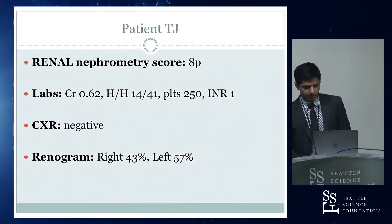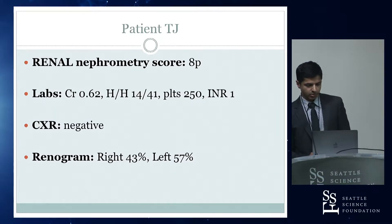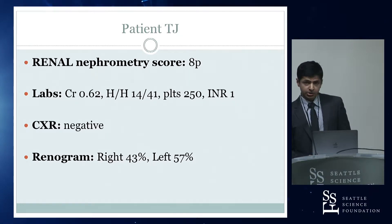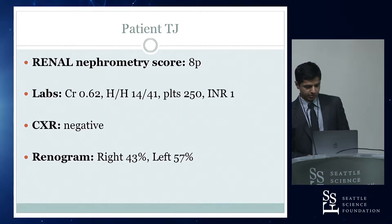We gave this mass a nephrometry score of 8p. Her labs are fairly unremarkable — she has normal kidney function. Staging chest X-ray was negative. We do get preoperative renograms in all our patients that undergo partial nephrectomy, and the right side was at 43% and the left side at 57%.